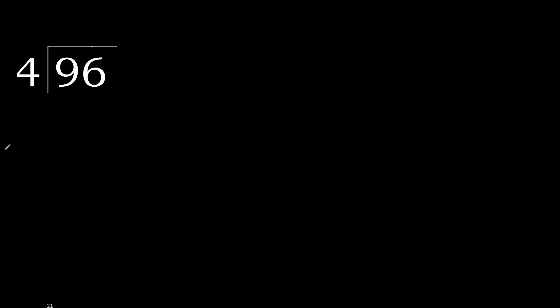96 divided by 4. 9 is not less, therefore work with 9. 4 multiplied by which number is nearest to 9 but not greater? 4 multiplied by 3 is 12 — 12 is greater. 4 multiplied by 2 is 8 — 8 is not greater. 9 minus 8 is 1.